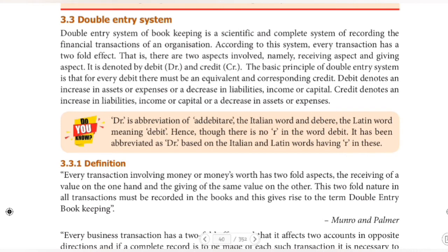Credit denotes an increase in liabilities, income, or capital, or a decrease in assets or expenses. The double entry system is based on the dual aspect concept. We have seen that for every debit transaction there is a corresponding credit transaction. The same concept is repeated in this double entry system — dual aspect concept and double entry system are essentially the same.